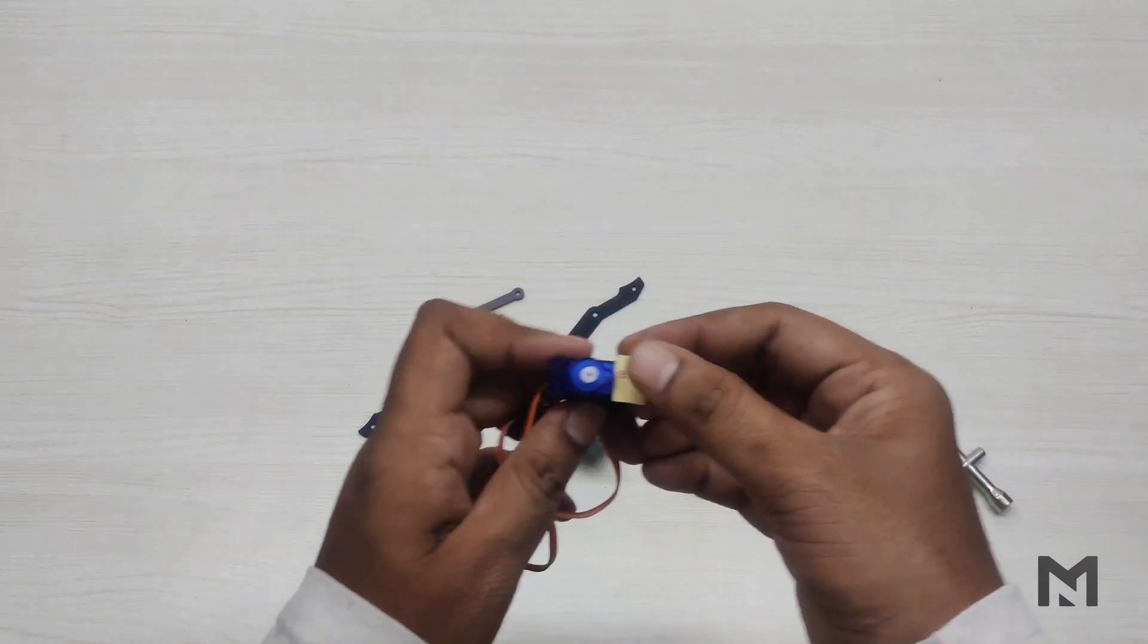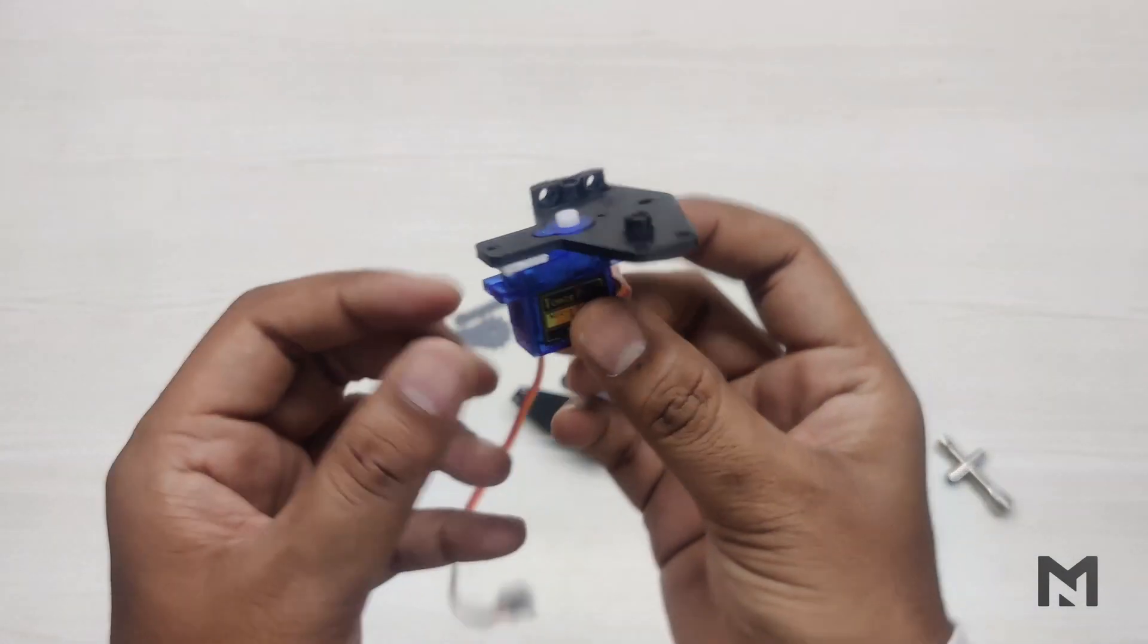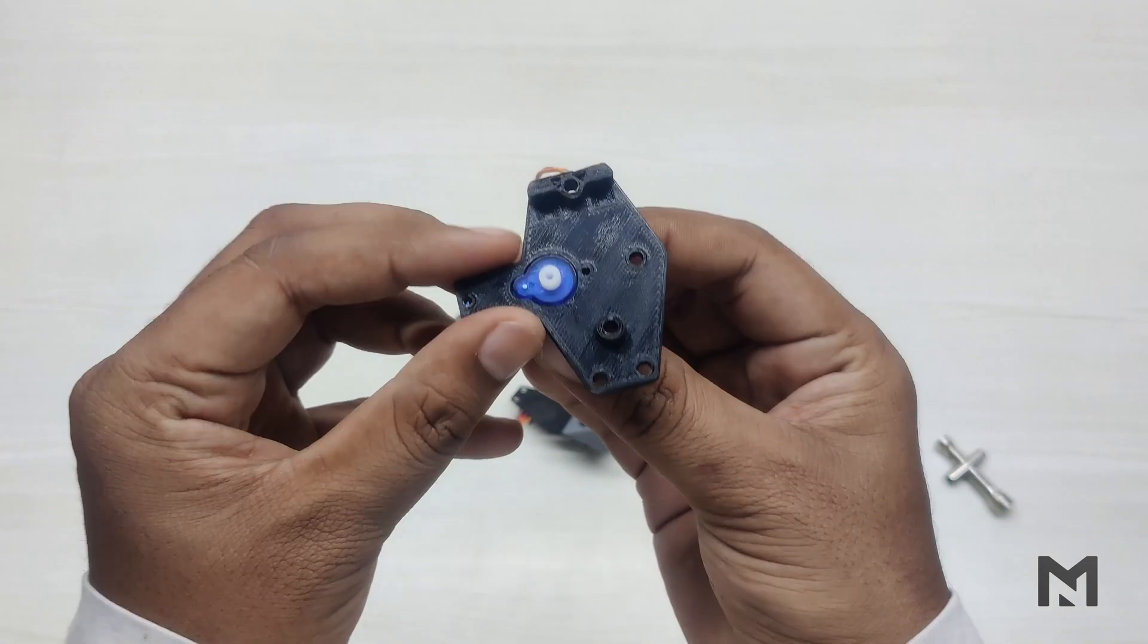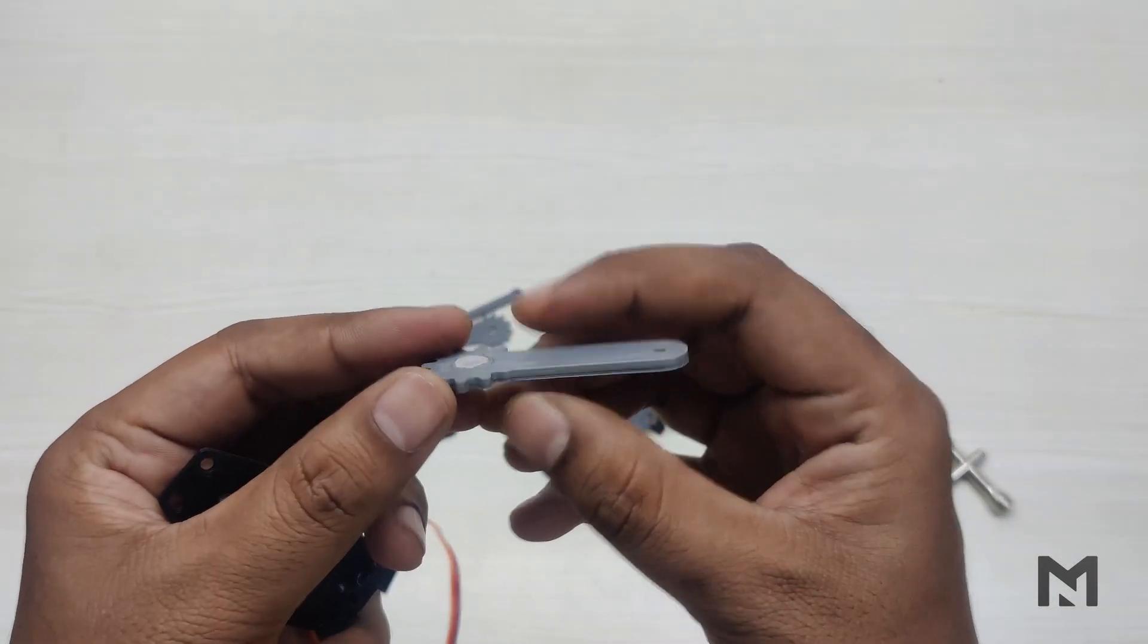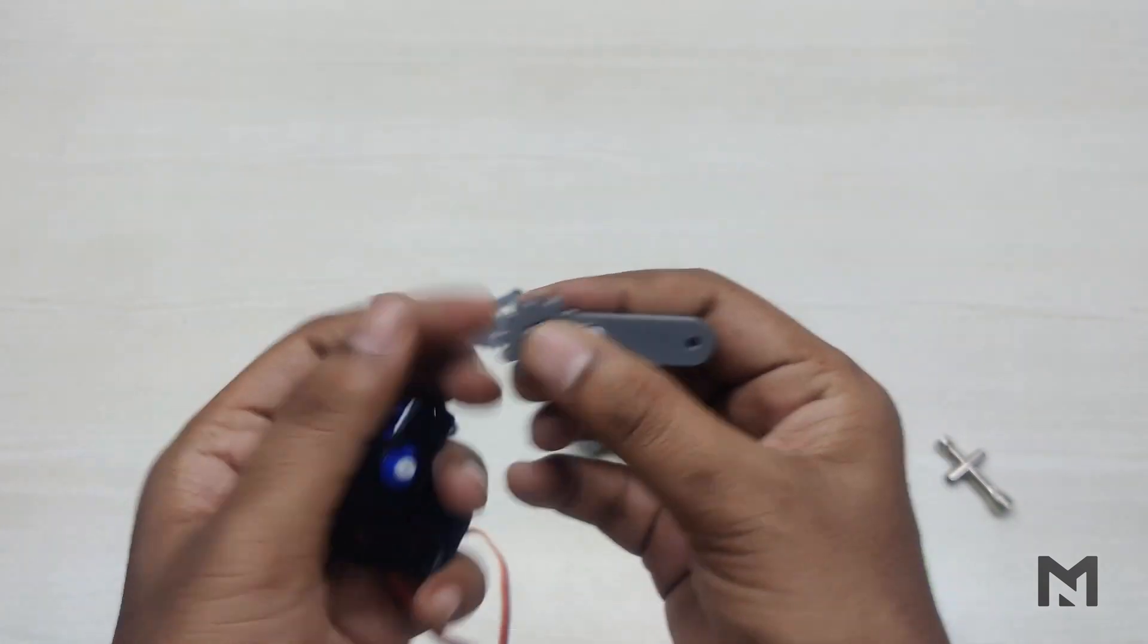Press it tightly to fix it in position. I have already inserted the plastic servo arm into the arm of the claw and fixed it with super glue.